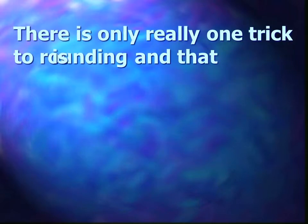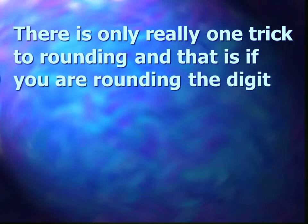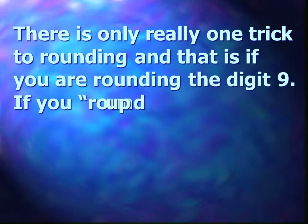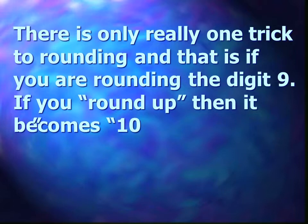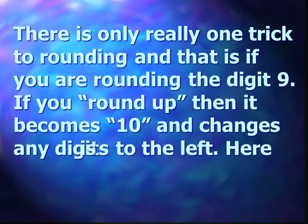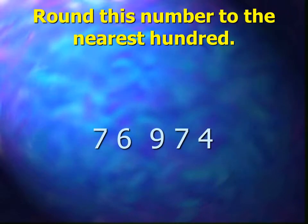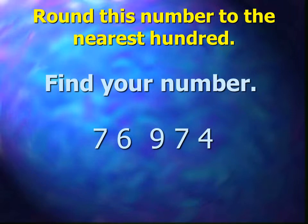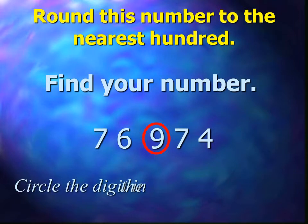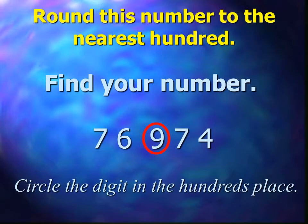There is only really one trick to rounding, and that is if you are rounding the digit nine. If you round up, it becomes ten and changes any digits to the left of it. Here is an example. Round this number to the nearest hundred. Find your number. Circle the digit in the hundreds place — in this case, the digit nine.